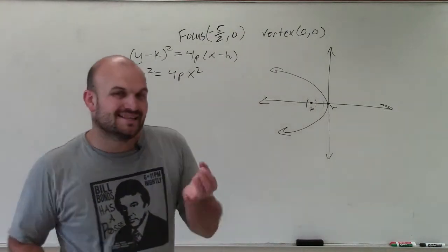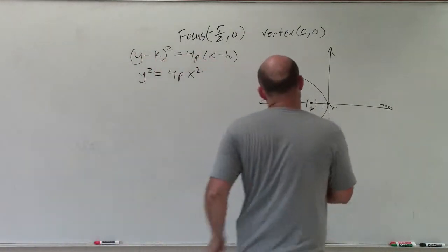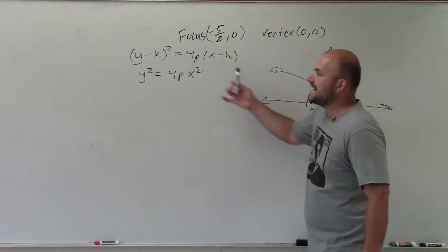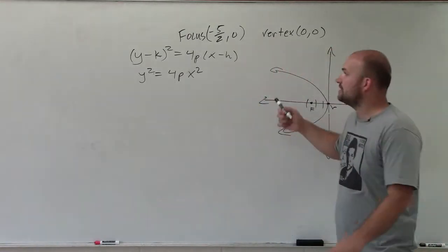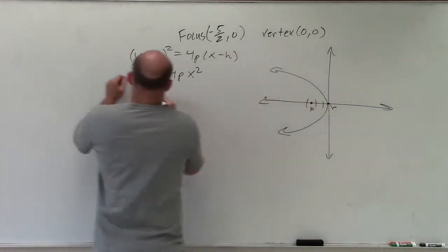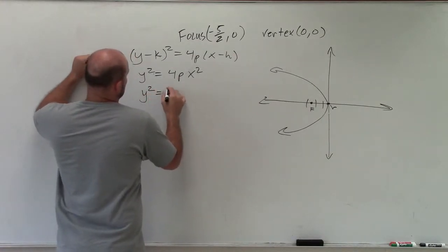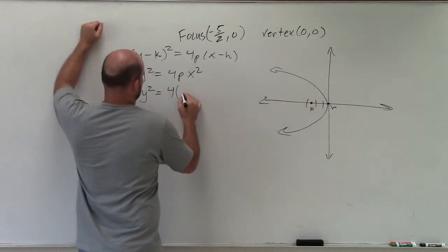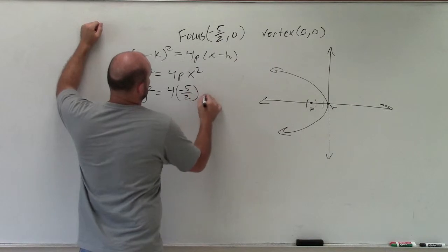Remember, the distance p represents the distance from the vertex to the focus. And that distance is negative. So p is going to be negative 5 halves. So I have y squared equals 4 times negative 5 halves x.